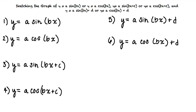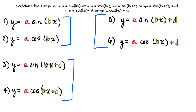Notice that the first two functions are similar in that they both have a term multiplied to the entire function, a, and a term multiplied to the x value in the function, b. The only difference between the two functions is that one is sine and the other is cosine. Notice this pattern in functions three and four, as well as in functions five and six. The only difference in these pairs is the use of sine versus cosine.